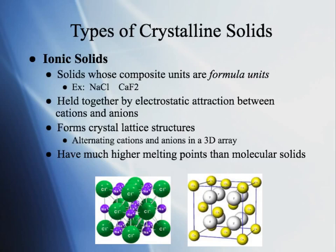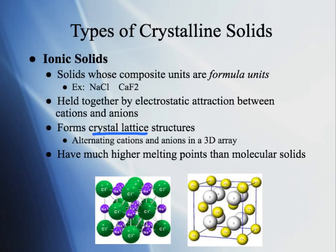Another type is ionic solids — composed of ionic compound formula units, held together by electrostatic attraction between anions and cations. They form what's called a crystalline lattice structure: alternating cations and anions in a 3D array where each negative is as far from other negatives and as close to positives as possible. Ionic solids have much higher melting and boiling points than molecular solids.